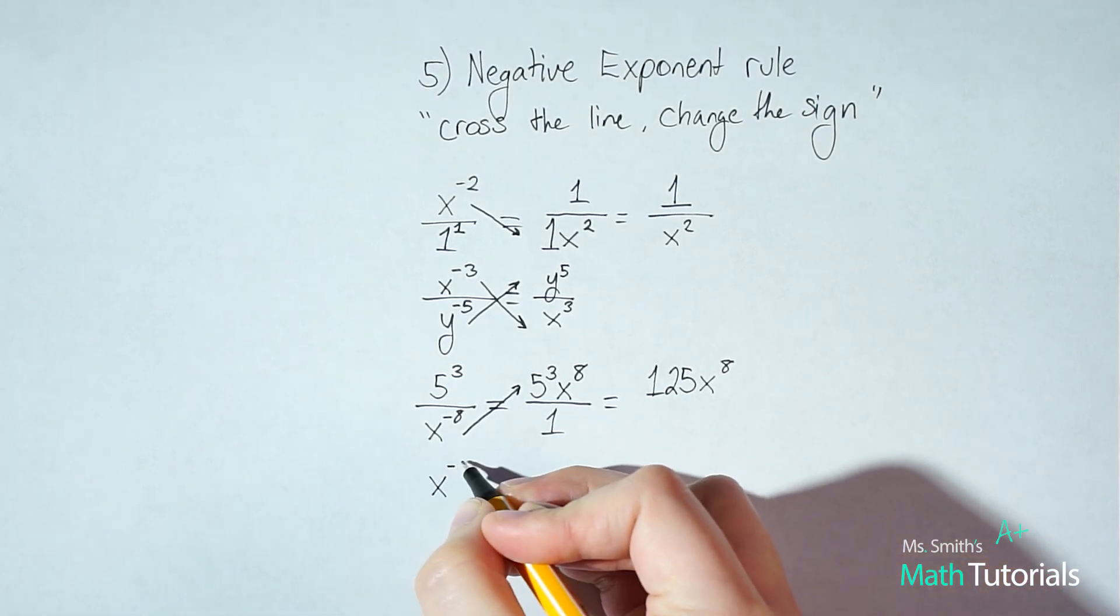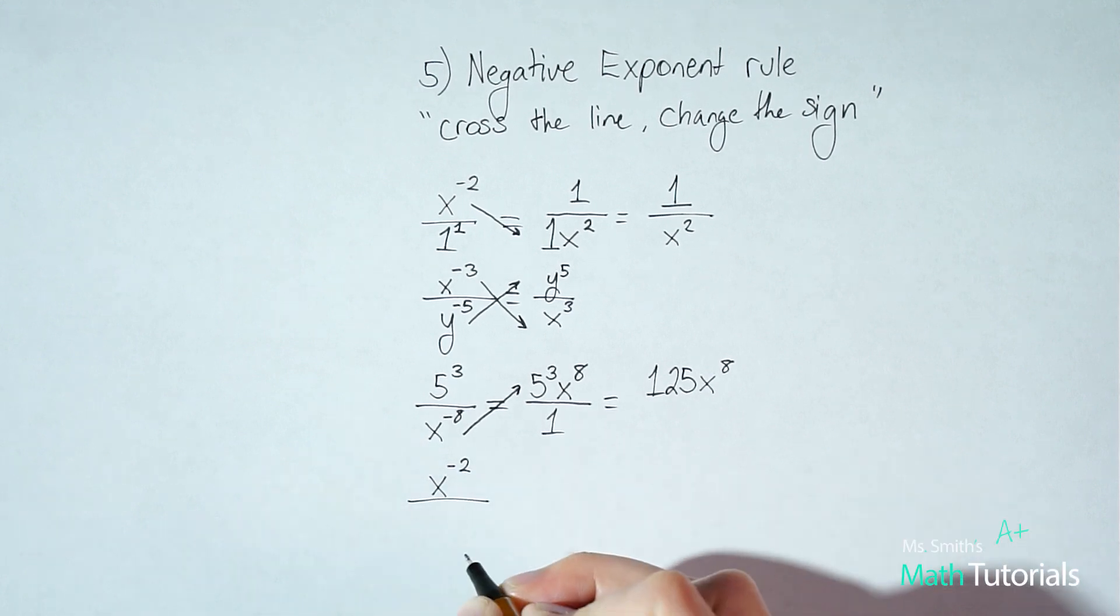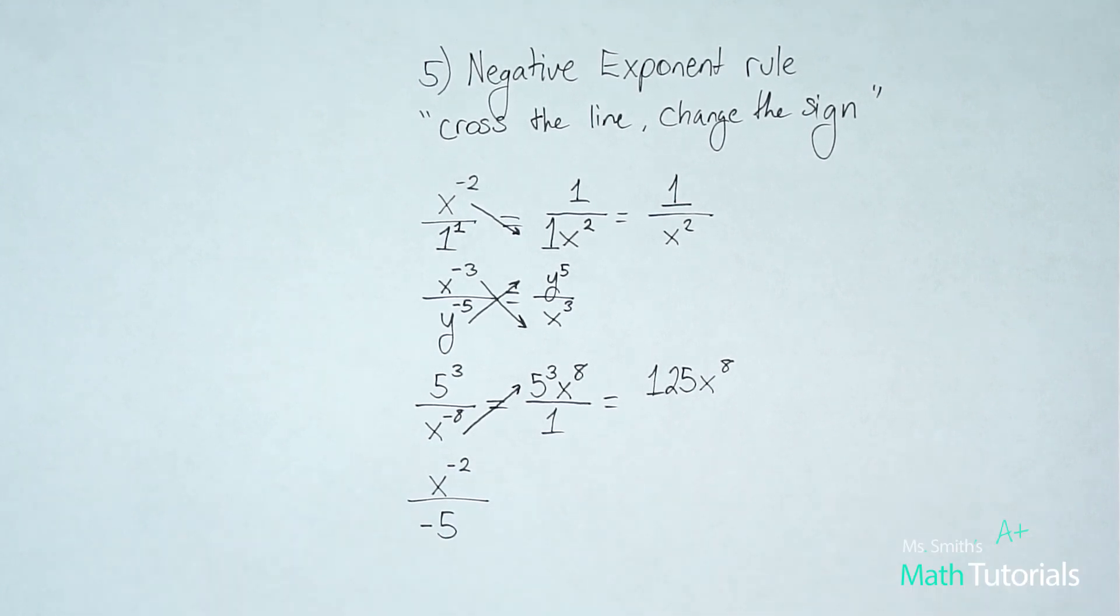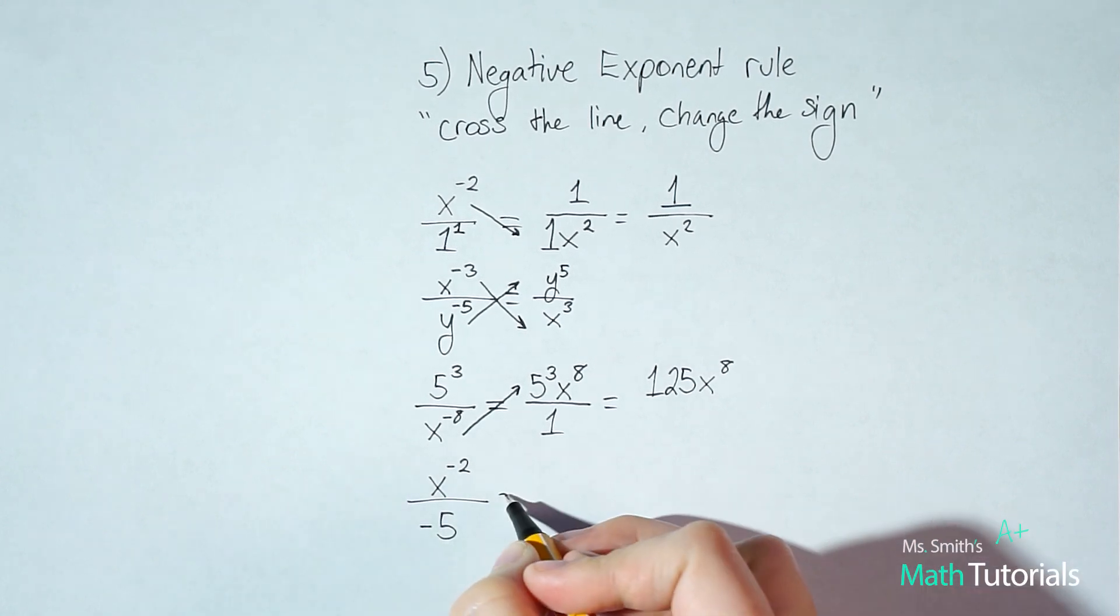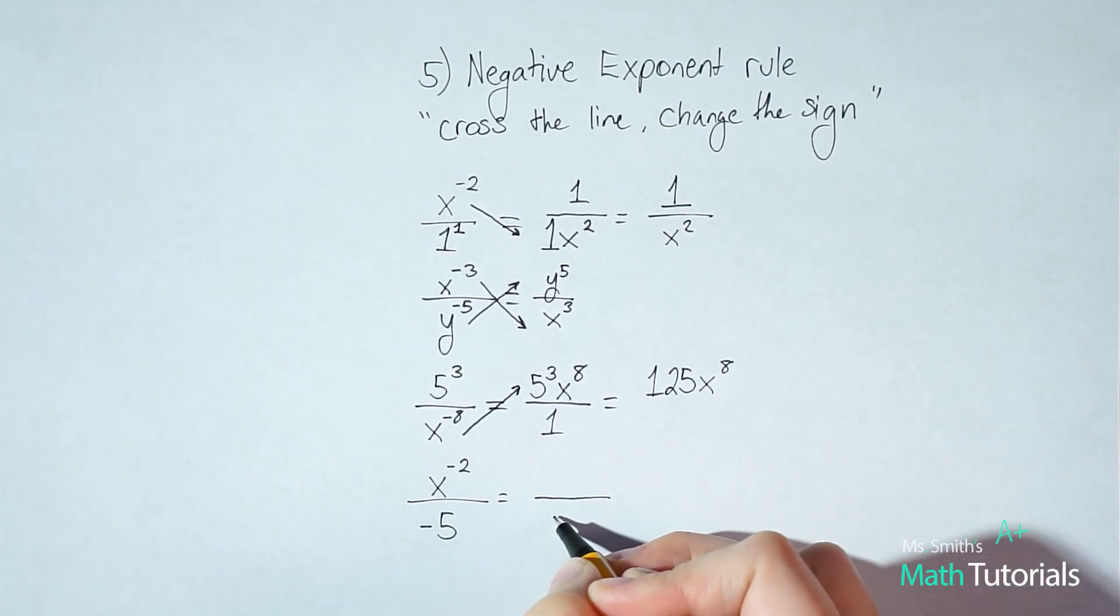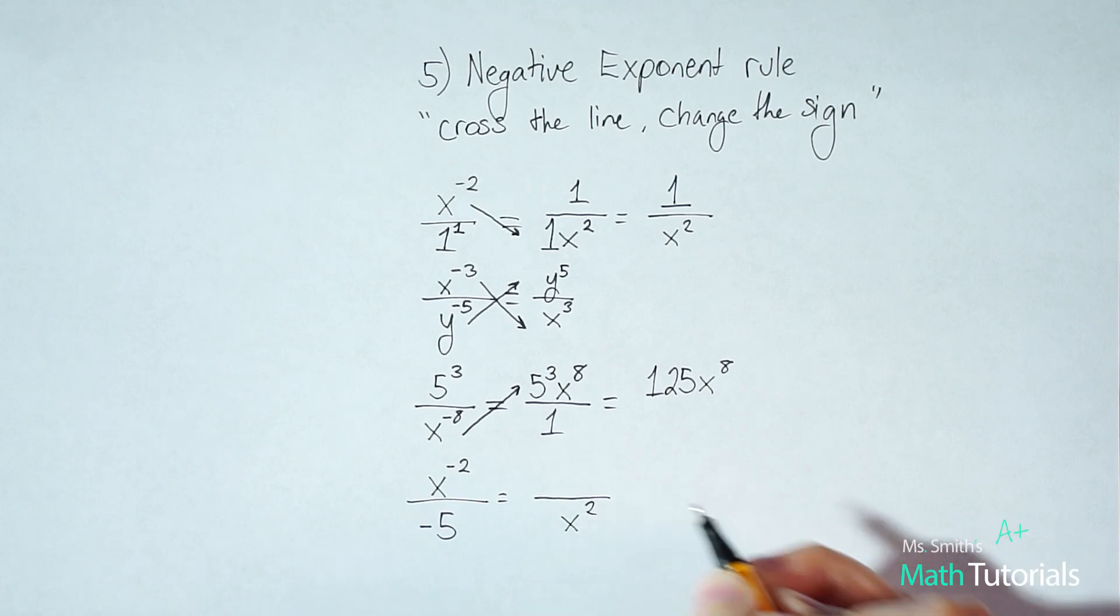And the last example I want to show, and this is more just kind of as a reminder, what if we had x to the negative two over negative five? Hopefully you notice by this point that we've got an x to the negative two. So we will definitely need to cross the line, change the sign, make that negative two into a positive two.